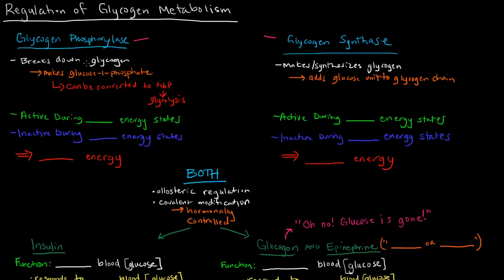Glycogen phosphorylase breaks down glycogen, and we talked about how that makes glucose 1-phosphate, which can be converted into glucose 6-phosphate, which can go on to glycolysis. Glycogen synthase, on the other hand, makes or synthesizes glycogen — it doesn't break it down. It adds a glucose unit to a glycogen chain.